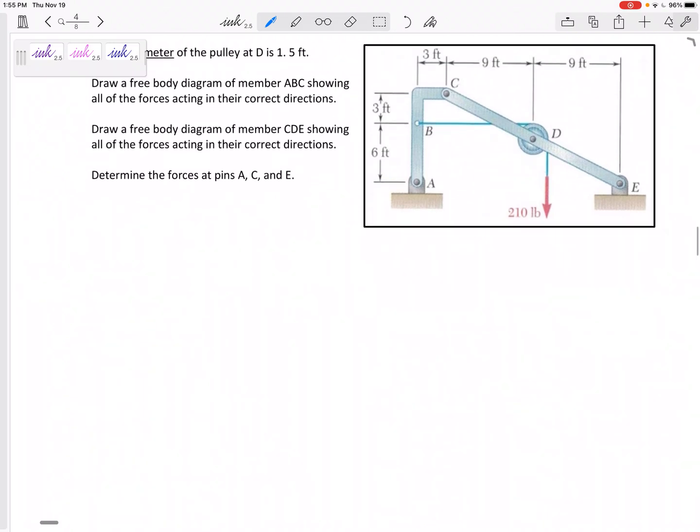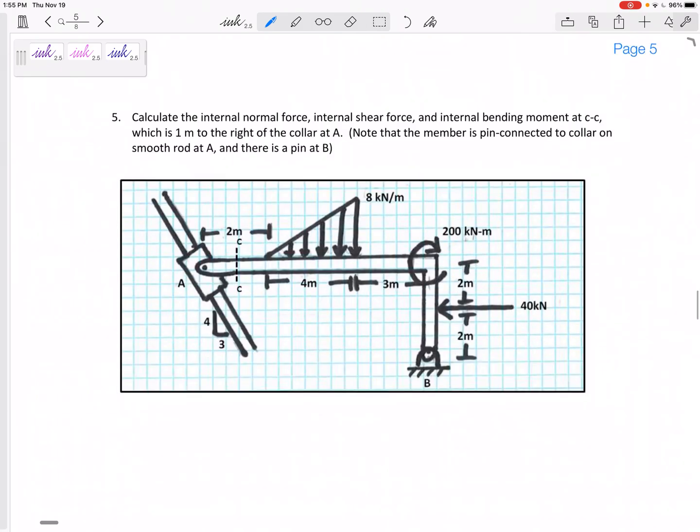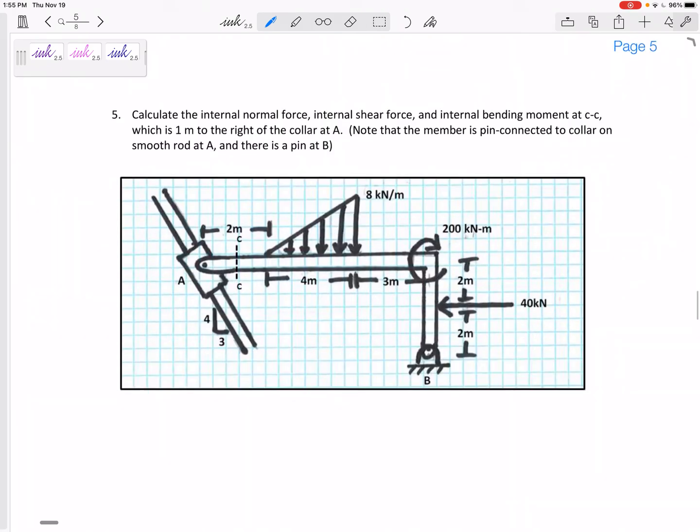Also for four and five, look at and think about distributed loads. Problem number five will be an internal load problem where you look at the whole free body diagram, solve for the pin at B, the collar at A, and then cut it. I'll show you where to cut it and solve for N, V, and M—the normal force, the shear force, and the bending moment.